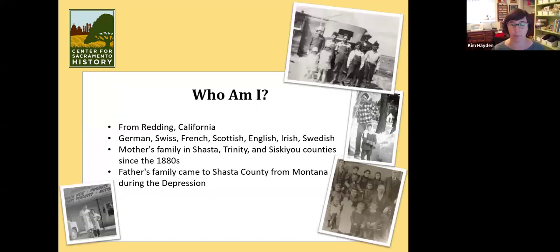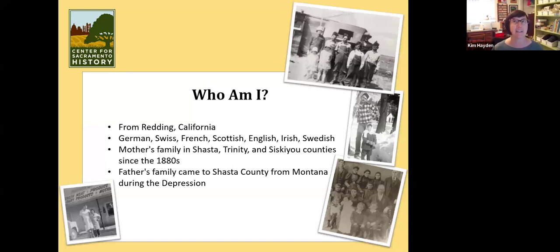A quick rundown of me genealogically: I am from Redding, California. From DNA tests and research others in the family have done, we're German, Swiss, French, Scottish, English, Irish, and Swedish. A large chunk — a little more than half — of my ancestry is German. We came from that confusing land known as Prussia, so if anyone else has Prussia in their genealogy, I feel your pain. It can be hard to research because it changed hands and borders many times.